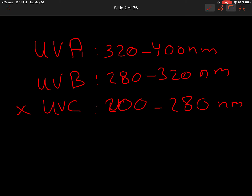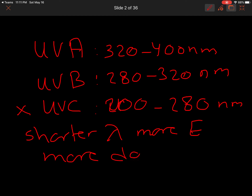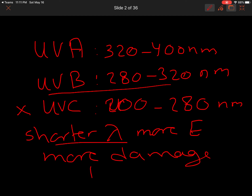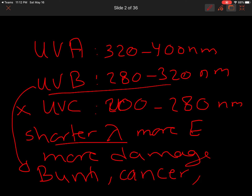A useful guide to remember: shorter wavelength means more energy and more damage. UVB has shorter wavelength and is more damaging, being the main cause of skin cancer. UVB is also important for stimulating vitamin D production, which promotes calcium absorption. There is a precursor called 7-dehydrocholesterol that is photolyzed by UVB to pro-vitamin D3, which is then converted to vitamin D3 (cholecalciferol).